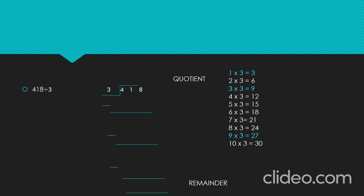Let's divide 418 by 3. The first step is to compare the leftmost digit of the dividend with the divisor — that is, 4 with 3. We know that 4 is greater than 3. So, by using the tables of 3, we find the product that is very near and less than 4. Here, 1 three's are 3, which is less than 4. So, let's write 1 in the hundreds place of the quotient and 3 below 4. Subtract 3 from 4 — that is, 4 minus 3 equals 1.